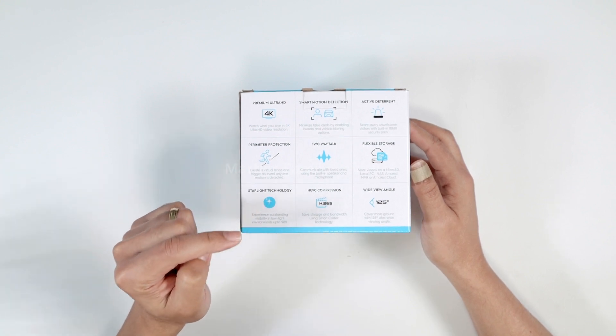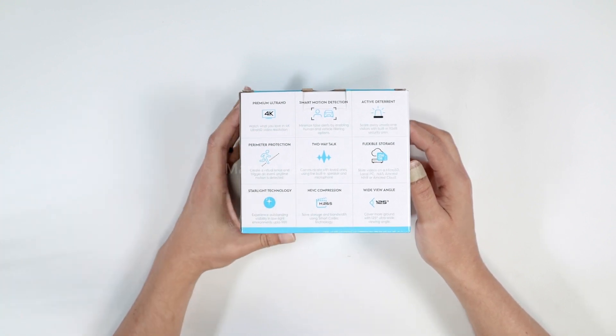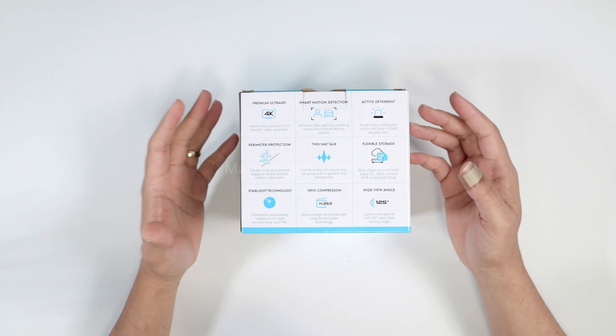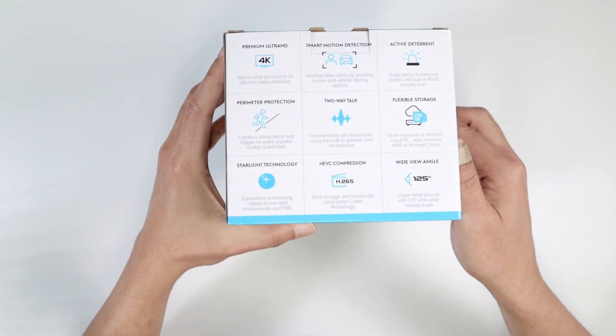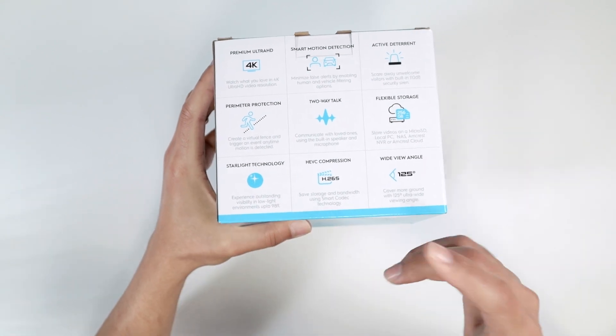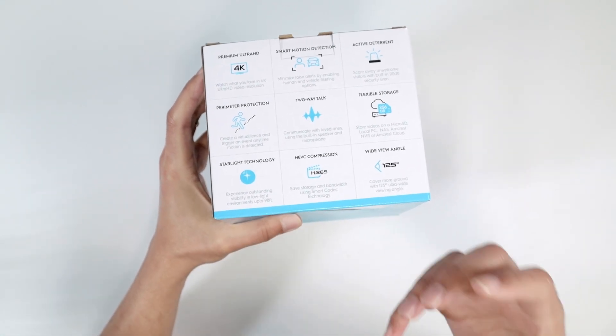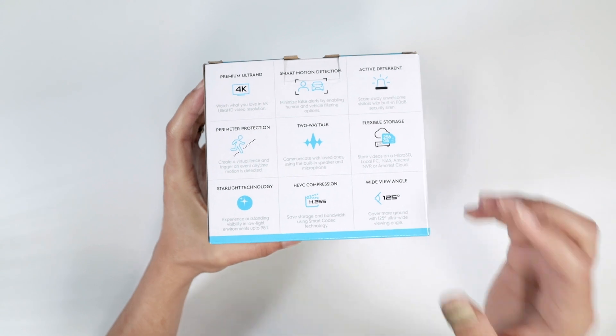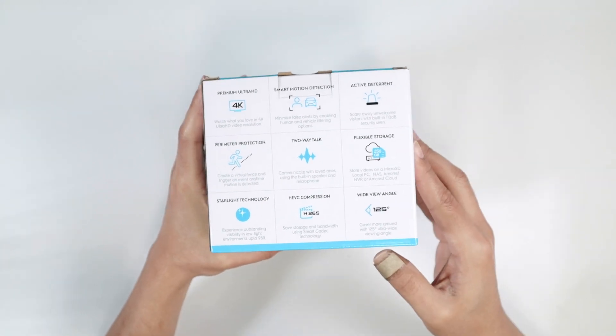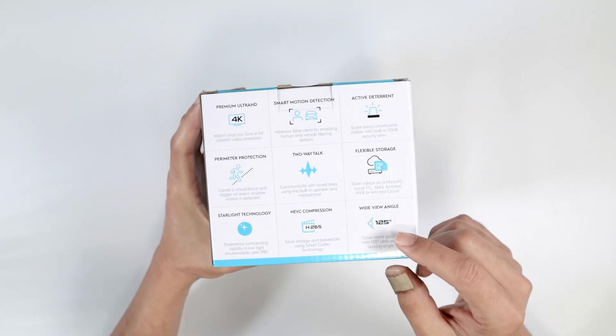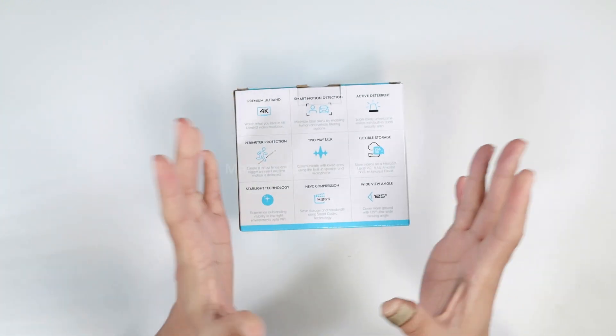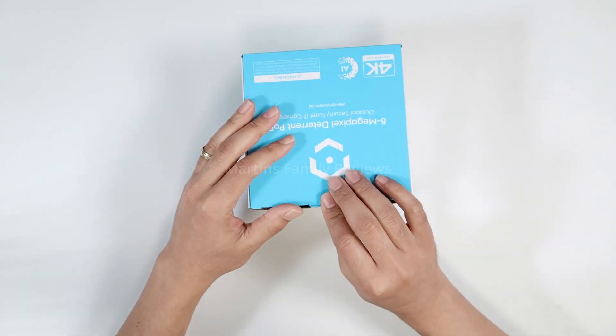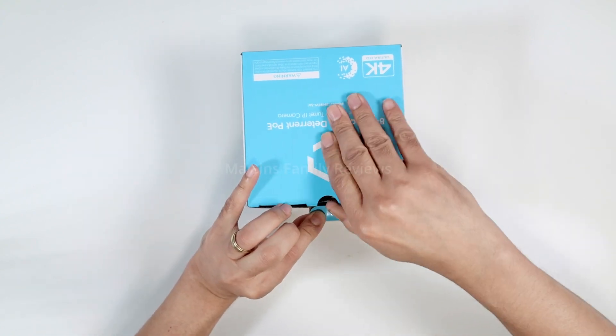Starlight technology, good, so you can see image with color during the nighttime. And the compression, pretty good, H.265. As you can see here, H.265 is a good codec to compress the video even more. So you save bandwidth, you save also space on your storage. And wide view angle, 125 is the view angle, so you can see more on the scenario. So let's just open the camera and see what's inside.